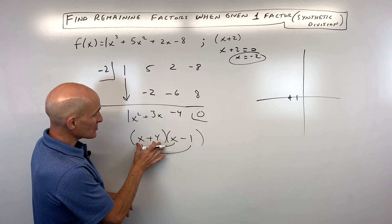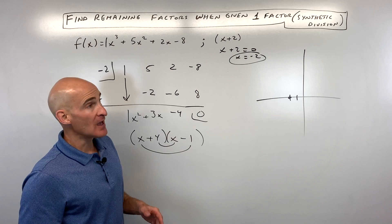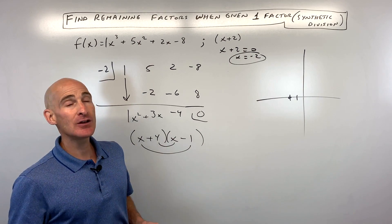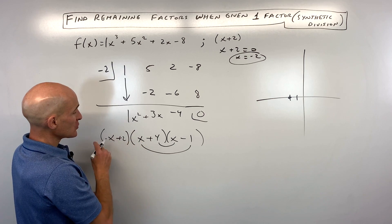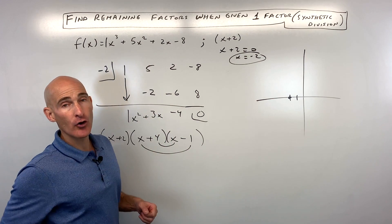So these are our remaining factors, x + 4 and x - 1. If you want to write the complete linear factorization, we could then add on x + 2 here. So if you were to multiply all this together, we'd get back that original polynomial.